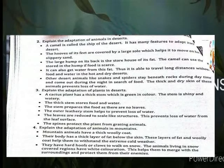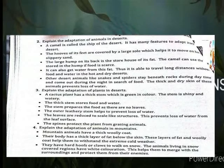Explain the adaptation of plants in the desert. The cactus plant has a thick stem that is green in color. The stem is fleshy and watery. The thick stem stores food and water. The stem performs the food-making process as there are no leaves. The outer waxy layer of the stem helps to prevent loss of water. The leaves are reduced to spine-like structures, which prevents loss of water from the leaf surface. The spines also protect the plant from grazing animals.